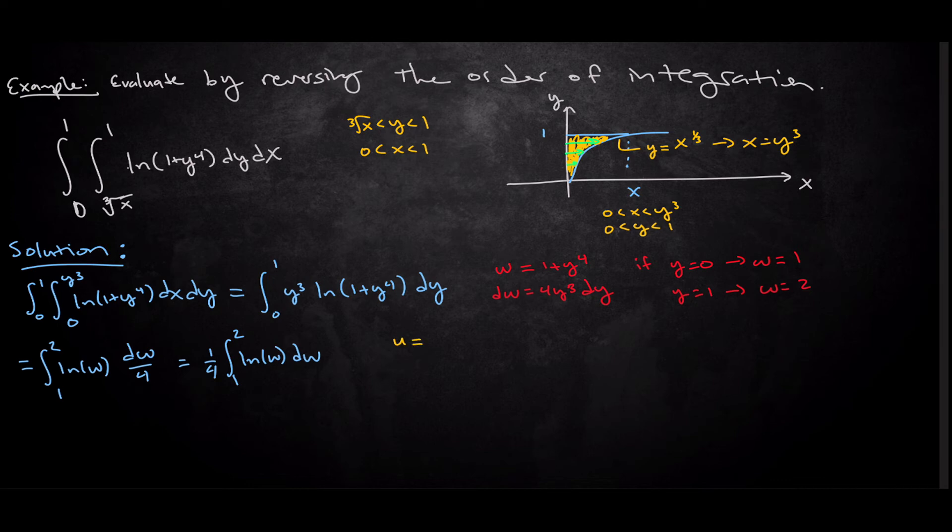So u equals natural log of w, that's what I want to differentiate. dv equals dw. du takes the derivative as 1 over w dw. v, we integrate, we get w. So we get w natural log of w minus integral of w over w, which is 1, dw. So this is really just going to be w natural log w minus w.